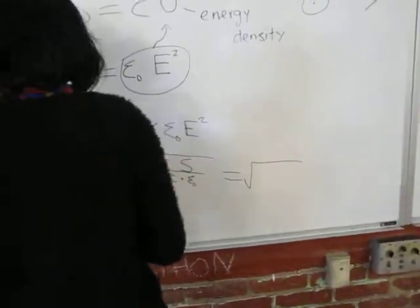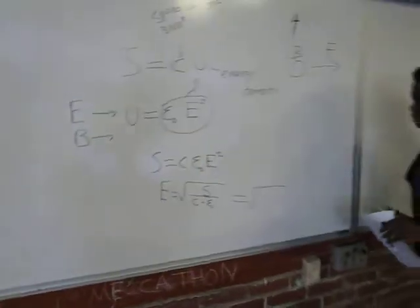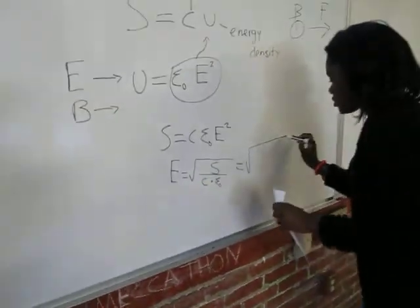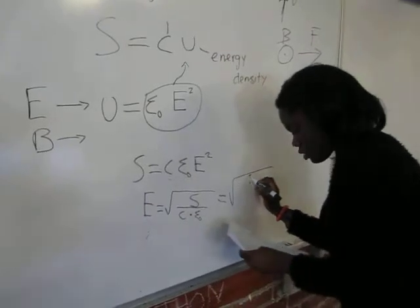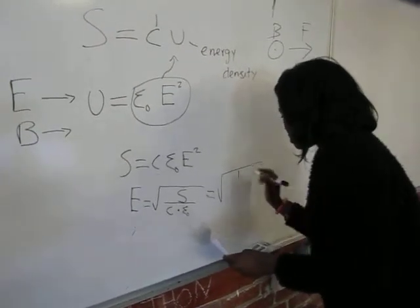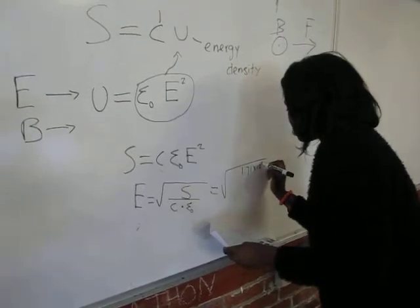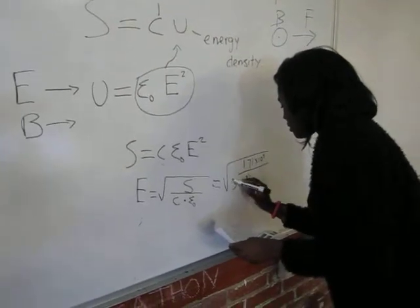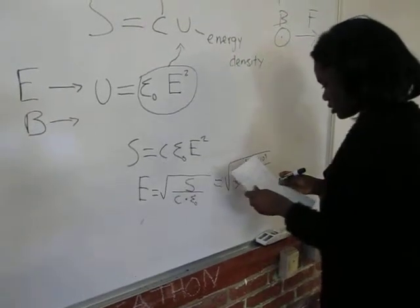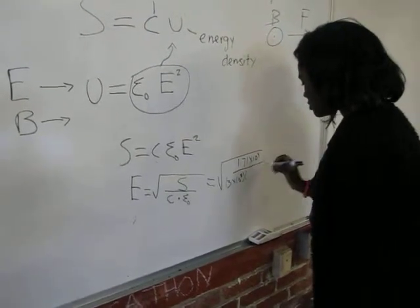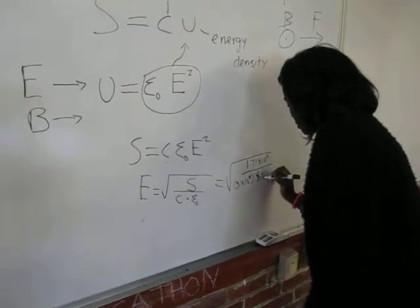Then you do your calculator math. You put the numbers in. The intensity is given as 1.71 times 10 to the 9. The speed of light we know is 3 times 10 to the 8. And the permittivity of free space is 8.85 times 10 to the negative 12.